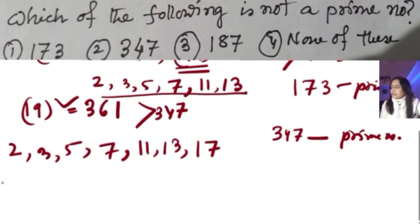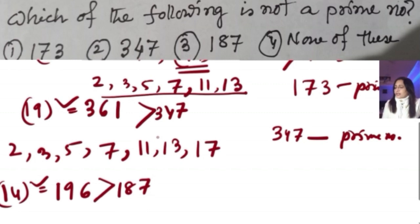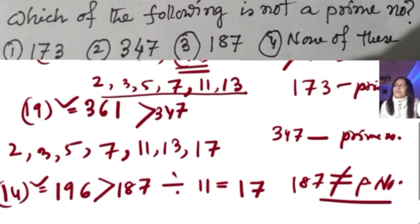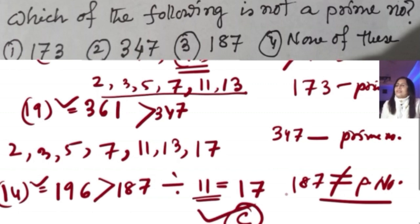Now for 187: 14 squared is 196, which is greater than 187. We test prime numbers up to 13: 2, 3, 5, 7, 11, 13. When we divide 187 by 11, we get 17 — so 187 equals 11 times 17. That means 187 is divisible by 11. Therefore 187 is not a prime number, and our answer is option C.